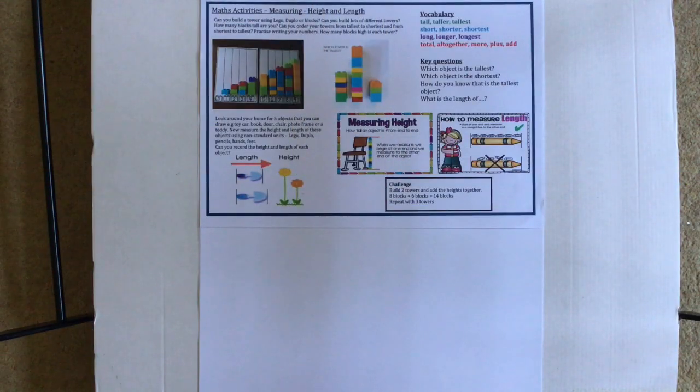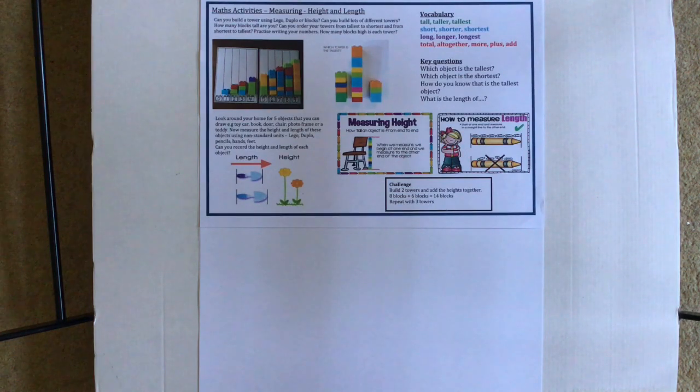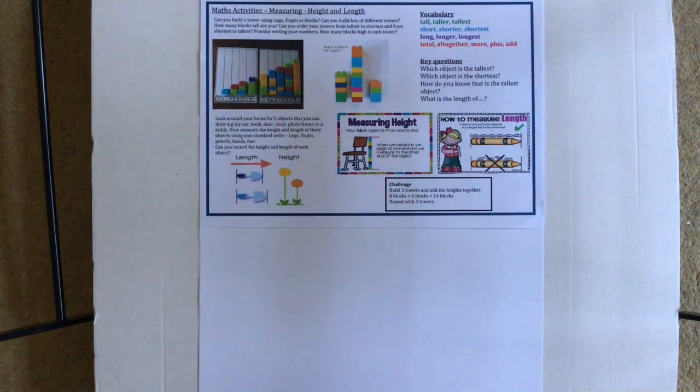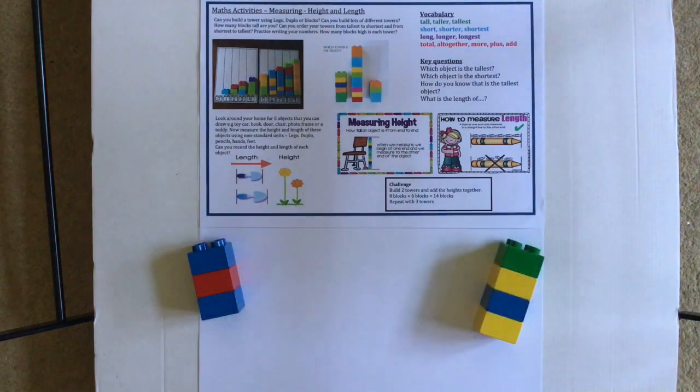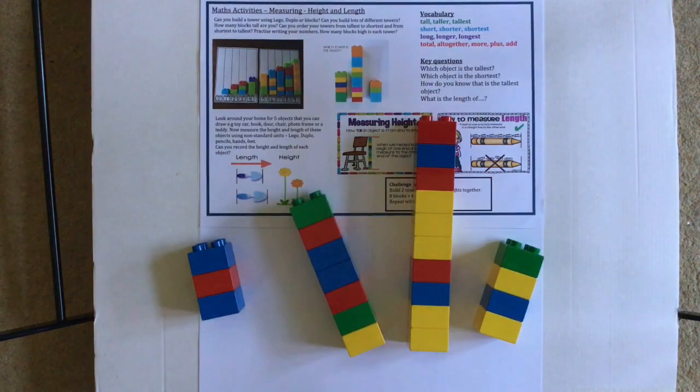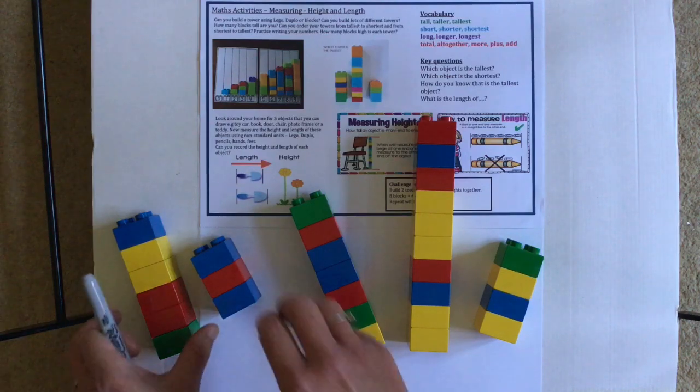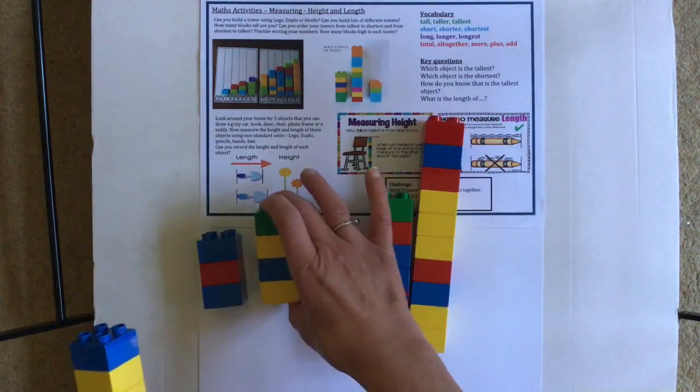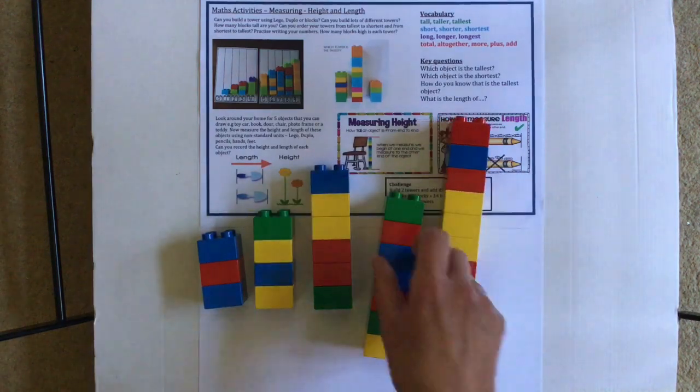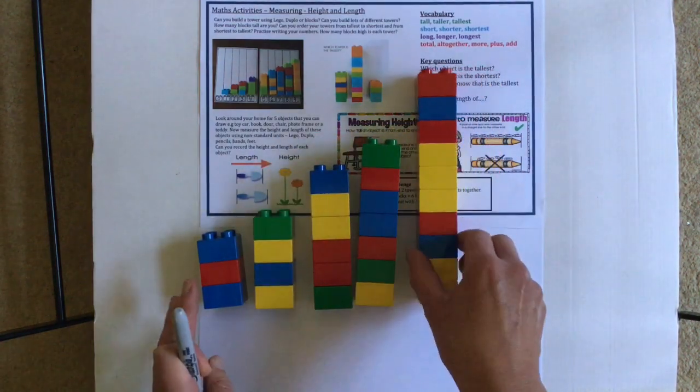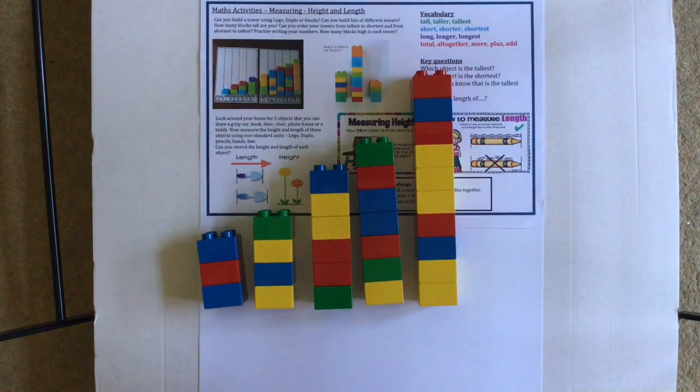Now we're going to look at some of the maths activities that Mrs. Kiriakou has sent you on the home learning sheet. The first activity is all about building lots of towers with blocks. If you have any sort of blocks, wooden blocks or mega blocks or Duplo, any sort of blocks, it'd be really good if you could build towers with them. Here's some that I made with my Duplo. All different sizes. When you've built a few blocks, maybe you could line them up in order of height. So I'm going to start with the shortest here. Then that one comes next. Then I think it's that one, then that one, then that one.